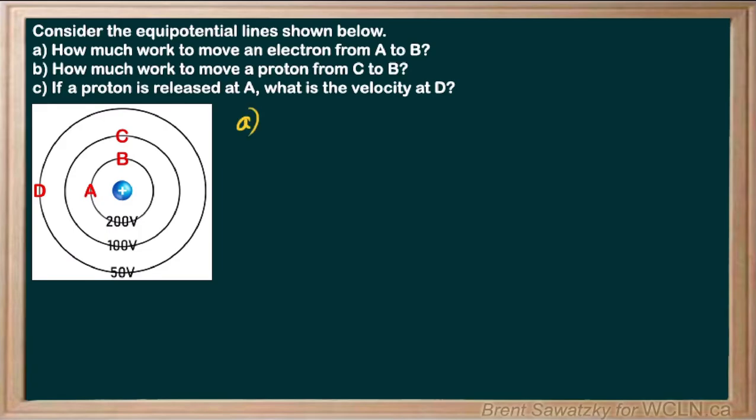For part A, we're looking at how much work to move an electron from A to B. We know that work is the change in potential energy, so we can say W = ΔEp. We can think about work as force times displacement for a constant force, or sometimes just doing the difference in potential energy is easiest.